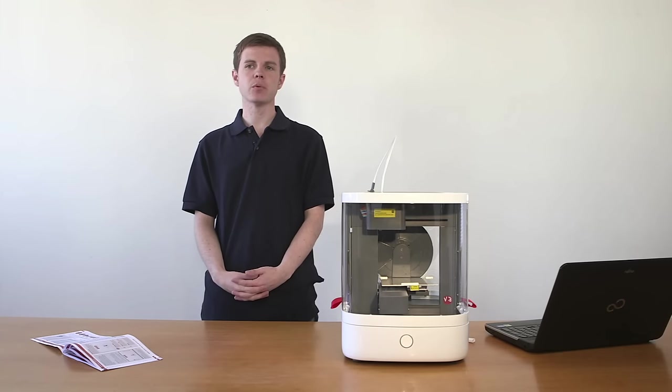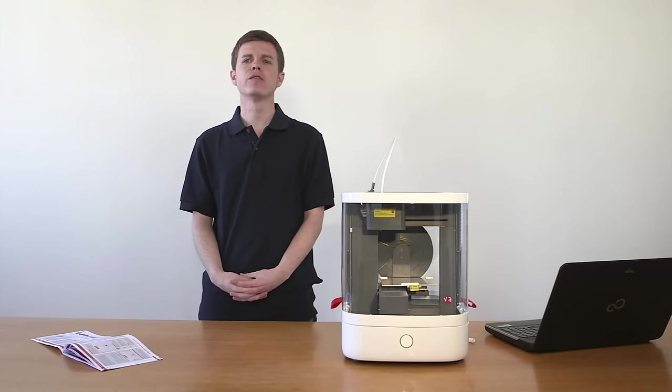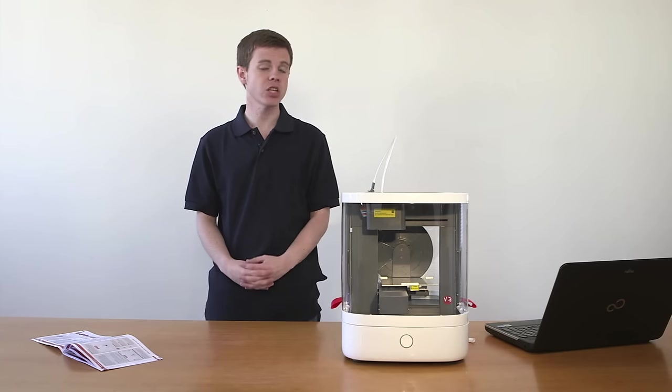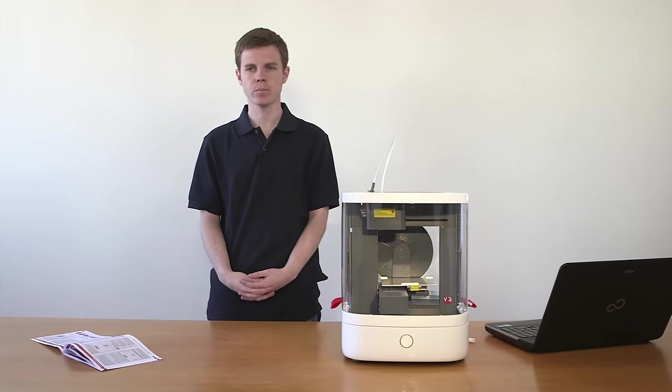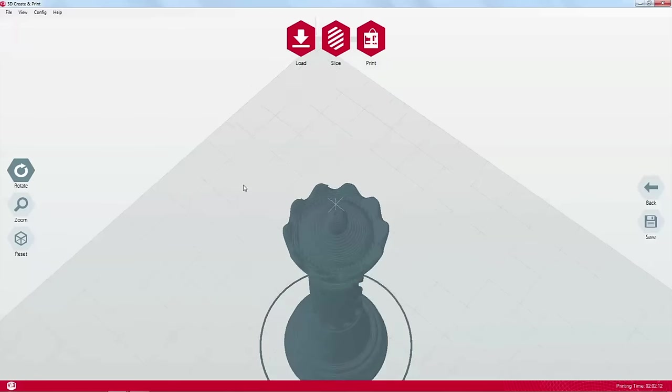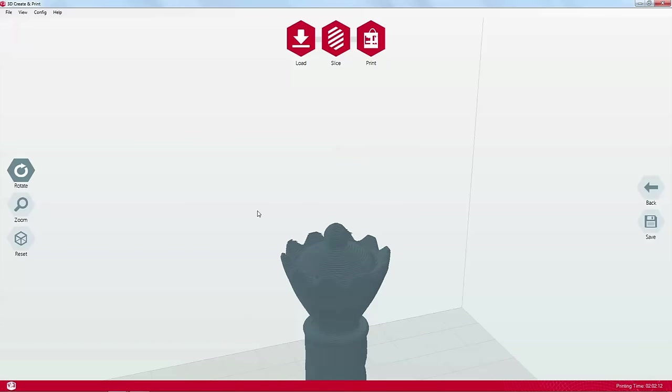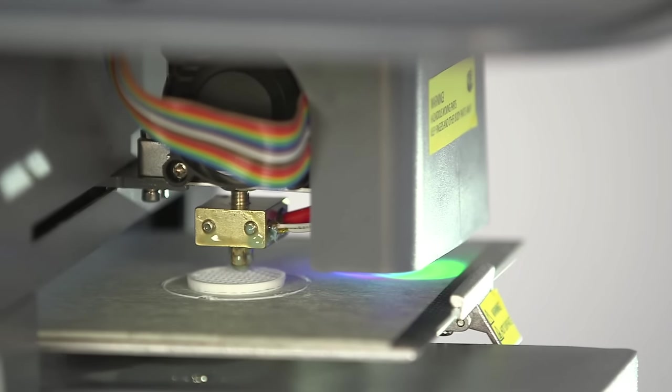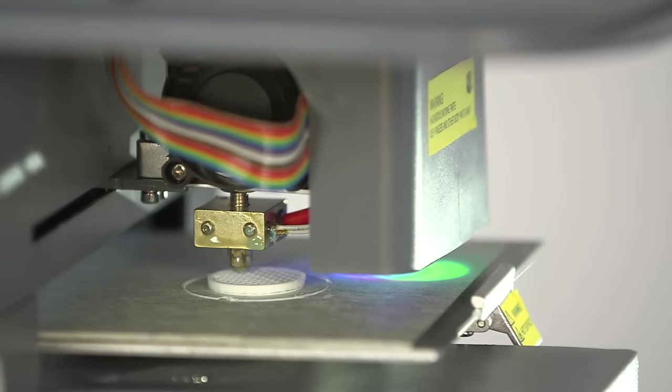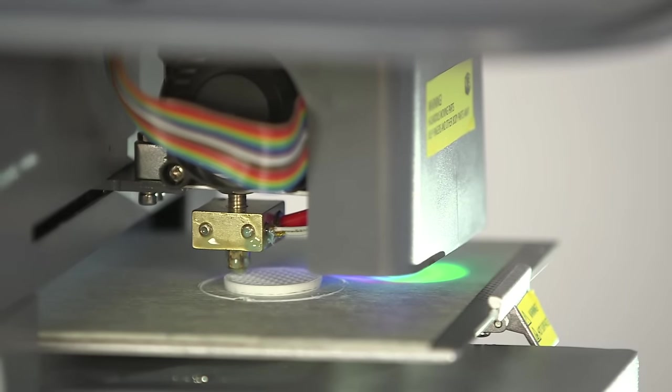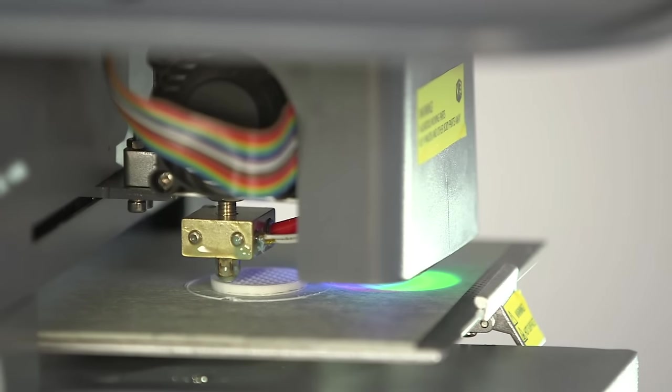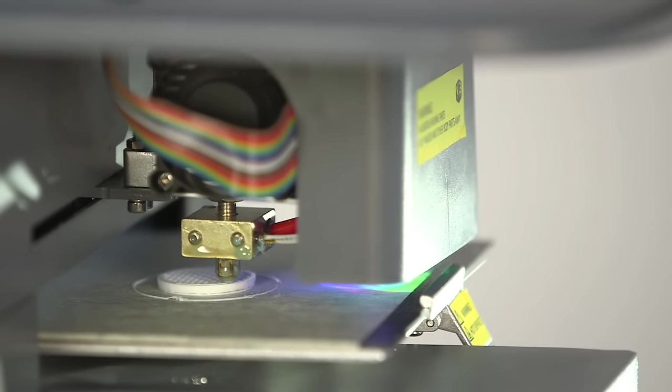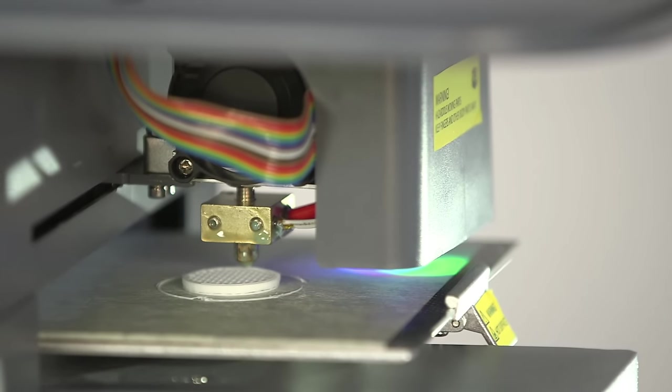We're nearly ready to print, but not quite. First the STL file must be sliced into layers. Each slice corresponds to a thin cross section of the object in your file. During printing, these cross sections build up, layer by layer, to create your three-dimensional object. The software does the slicing for you with a single click, but it also gives you some customizing options.